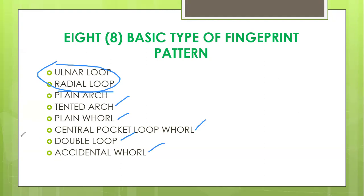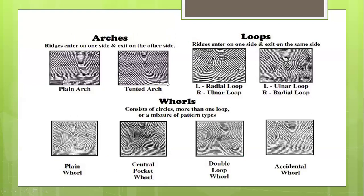Those are the eight basic types of fingerprint pattern. These are the prints of arch patterns — the plain and tented arch — the loops, the radial and ulnar loop, and the whorl patterns: the plain whorl, central pocket loop whorl, double loop, and accidental whorl.